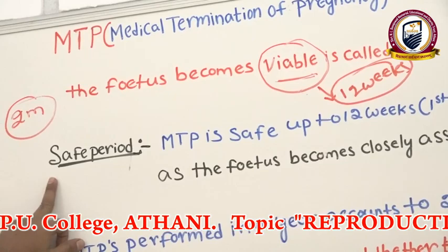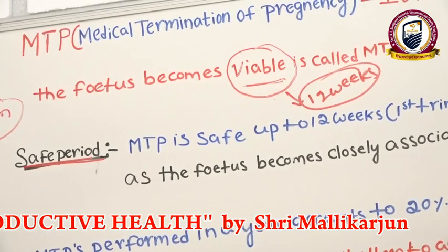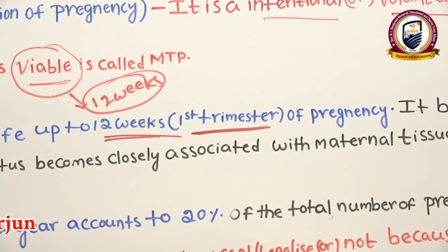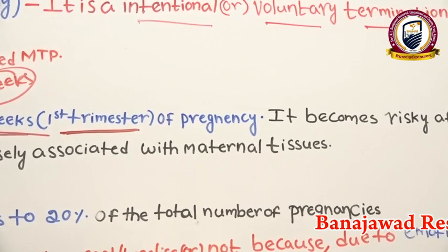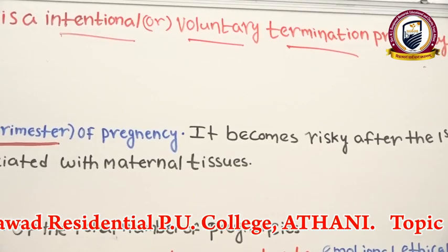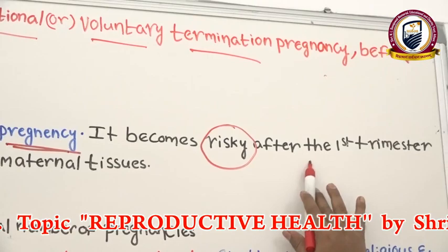The safe period for MTP is up to 12 weeks, which is the first trimester. The nine-month gestation period is divided into three trimesters. MTP performed up to 12 weeks — the first trimester — is considered the safe time for removal of pregnancy.